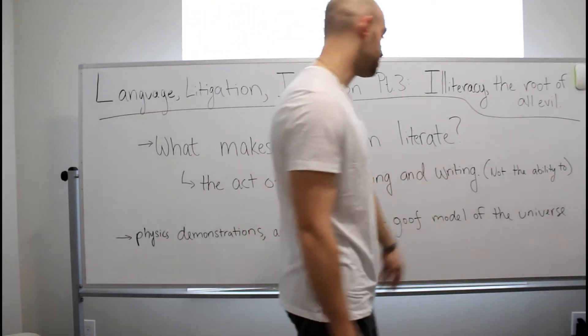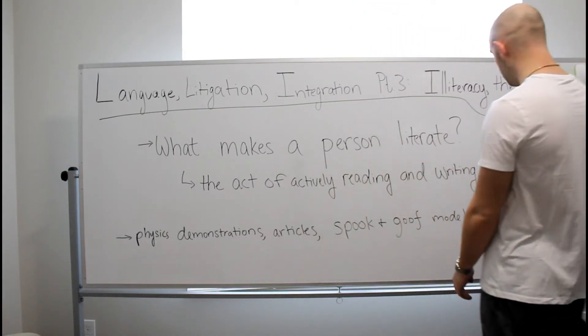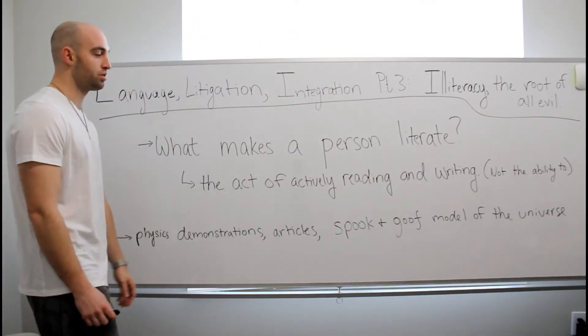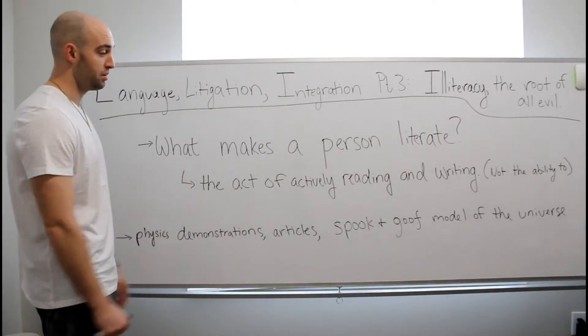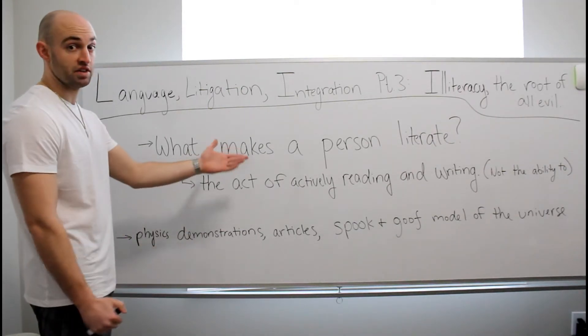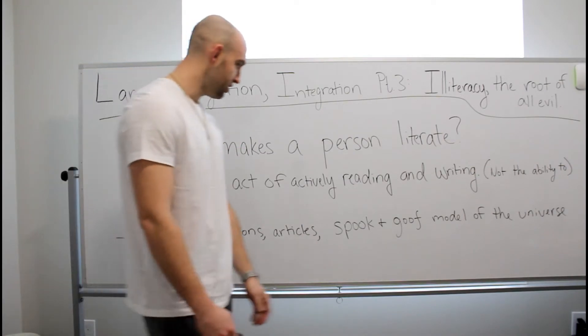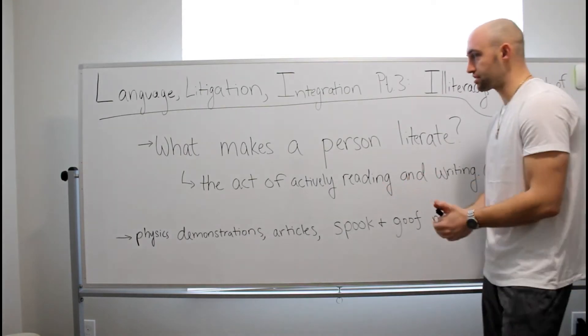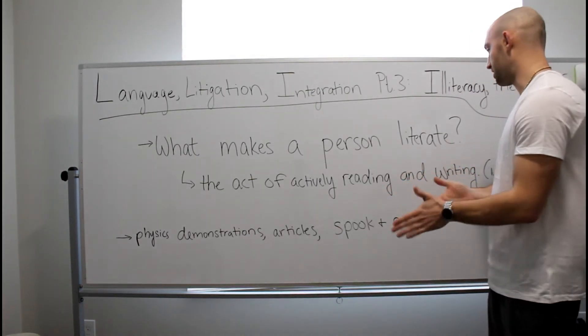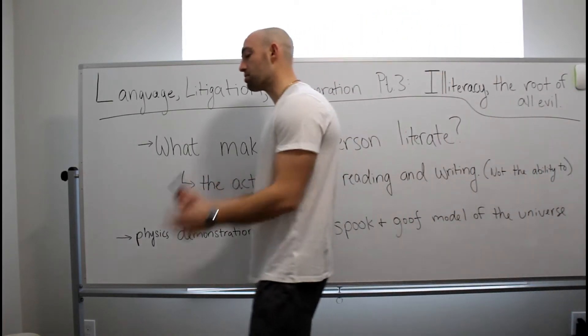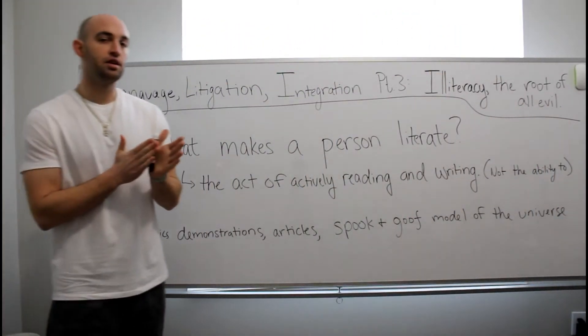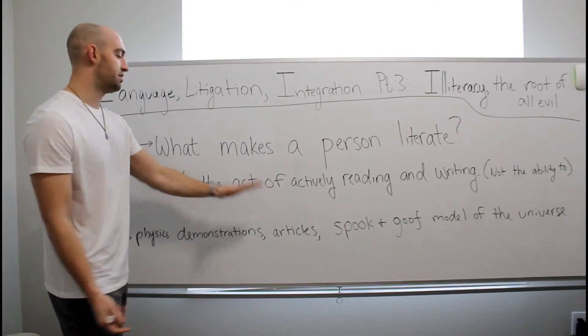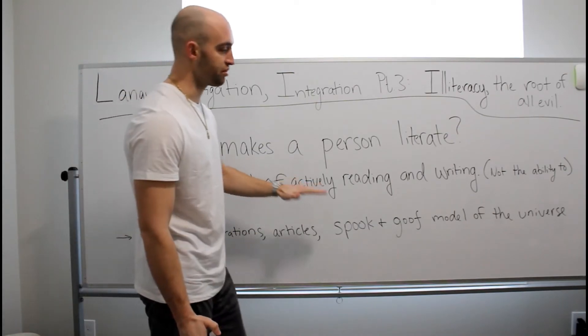And I'm going to propose a breakthrough scientific model called the Spook and Goof Model of the Universe. And that is going to be kind of a joke, unfortunately probably not a joke, but just kind of a mockery of an illiterate society. To start, let's ask ourselves a question. What makes a person literate? If you asked anyone on the street, they would probably respond that the ability to read and write makes you literate. And I would say yes,